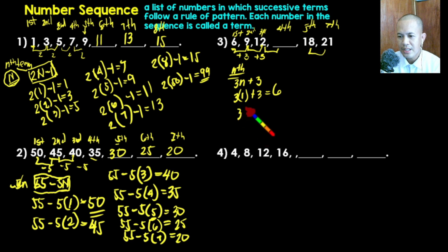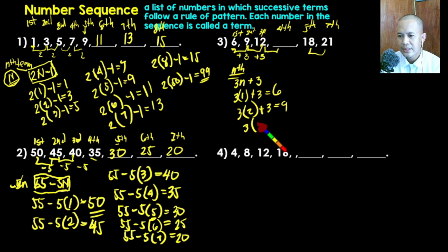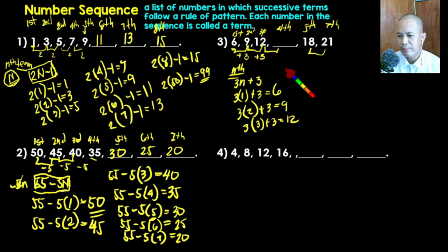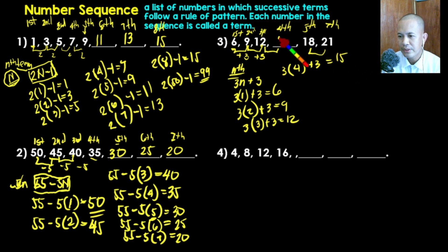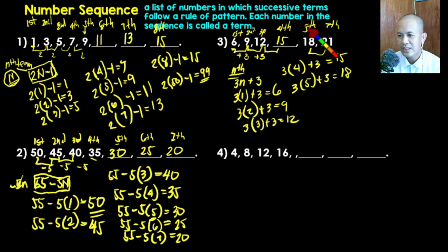For the second term, n equals two: three times two is six, plus three gives nine. For the third term: three times three is nine, plus three gives twelve. For the fourth term: three times four is twelve, plus three gives fifteen. So the fourth term is fifteen. For the fifth term: three times five is fifteen, plus three gives eighteen. For the sixth term: three times six is eighteen, plus three gives twenty-one.